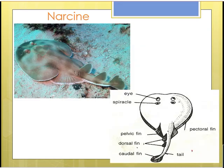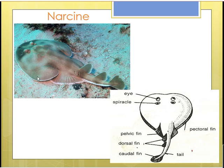Now we will look at the fin system. It consists of pectoral fins, pelvic fins, two dorsal fins, and a caudal fin. The paired pectoral fins are continuous with the sides of the head. There are two pelvic fins, two dorsal fins, and a caudal fin encircling the tail. This fin system helps it to move about.